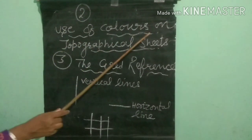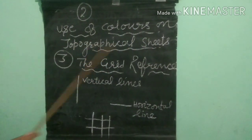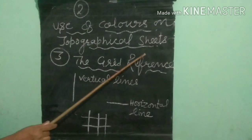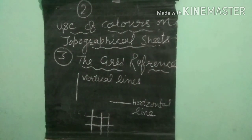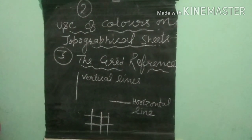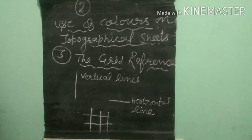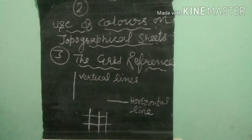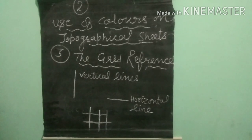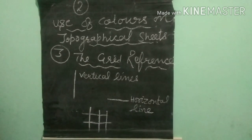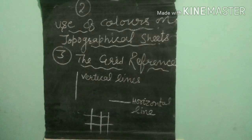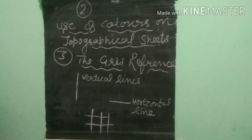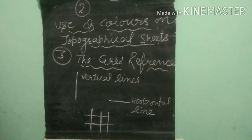The second topic is use of colors on topographical sheets. Each color used on maps has its own significance. These colors are universally accepted. The natural and man-made features on topographical maps are shown in colors such as yellow, brown, and red, all of which show different things.